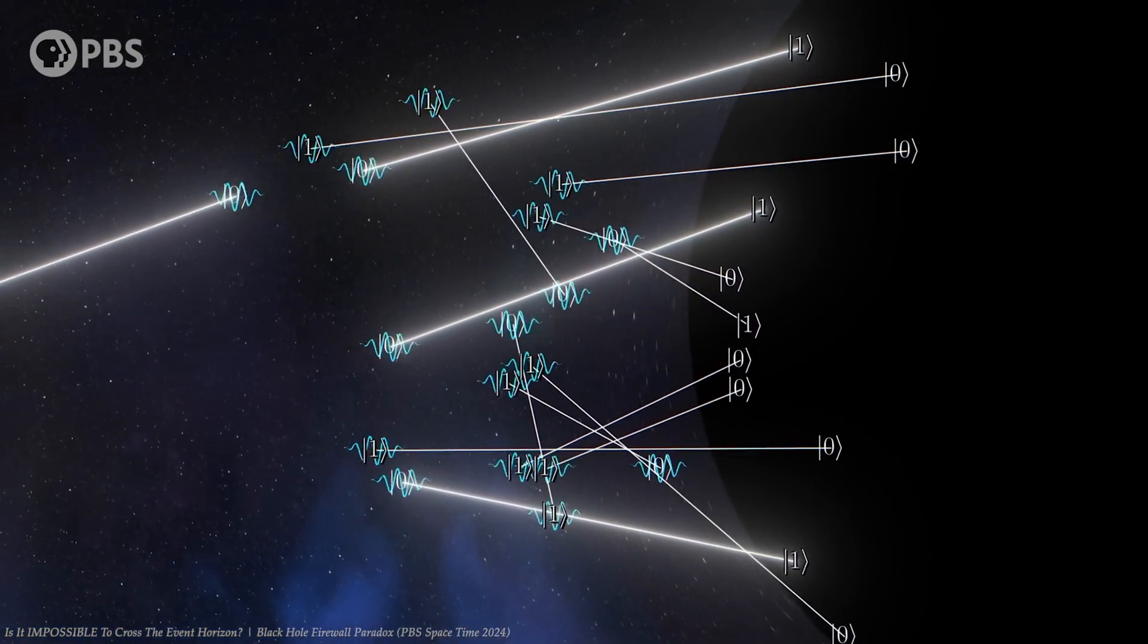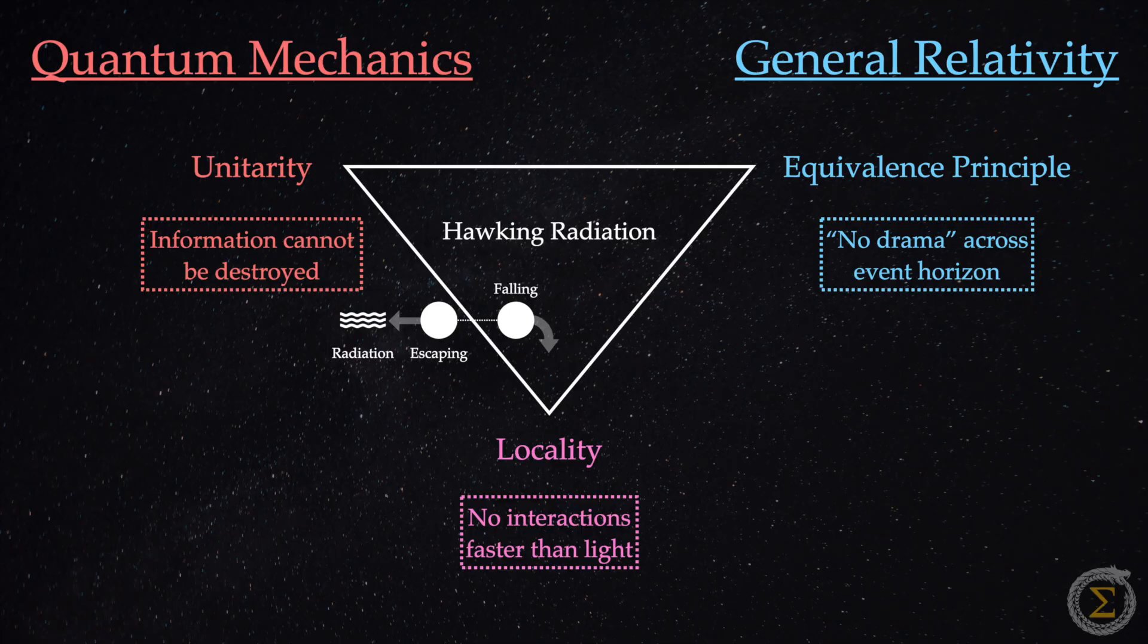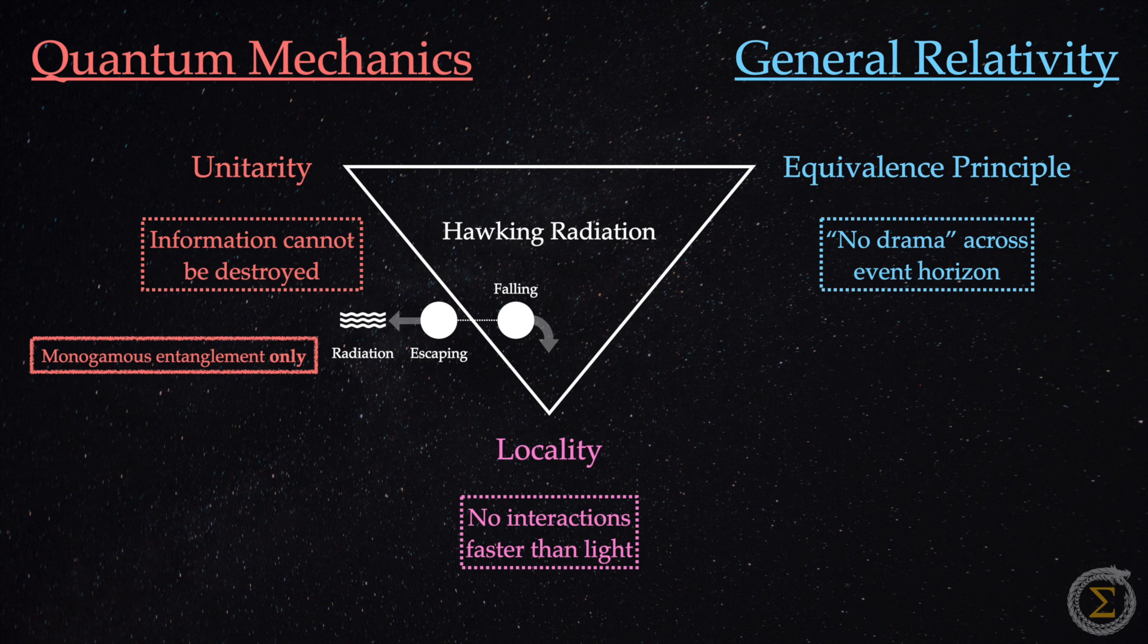Here lies the problem. This double entanglement is strictly forbidden by the principles of quantum mechanics. Entanglement can only be monogamous. So this creates a seemingly irresolvable conflict. Something has to give.